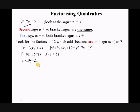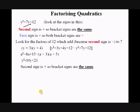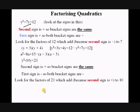Looking at another one: this time both signs are going to be the same because the second sign is plus, but they're both going to be minus because the first sign is minus. We're still looking for the factors of 21 which add to 10. The second sign is plus so the brackets are the same; the first sign is minus so the bracket signs are minus. The two factors are 3 and 7: 7 × 3 = 21 and 7 + 3 = 10. Both brackets are minus, so we change the question marks to 3 and 7.